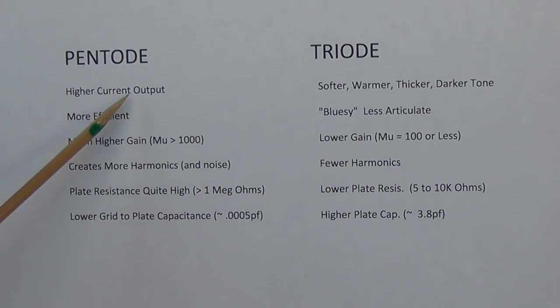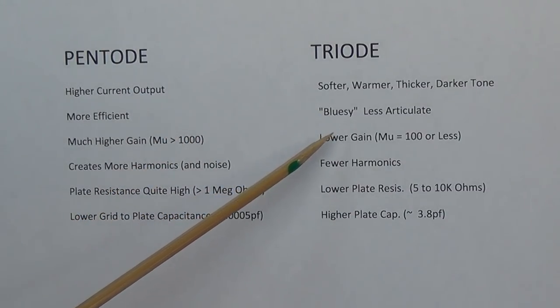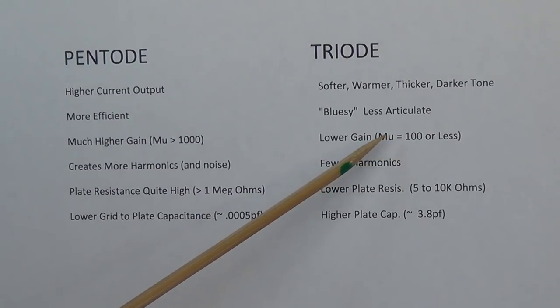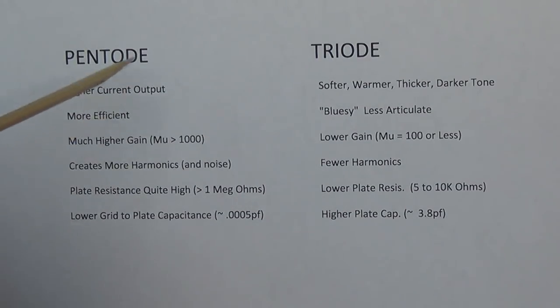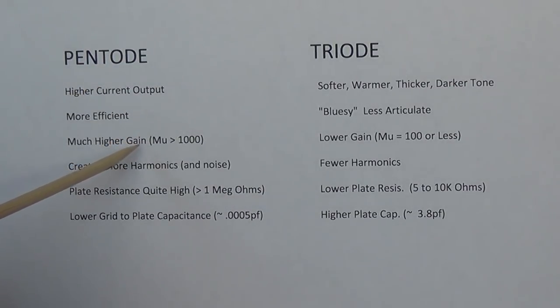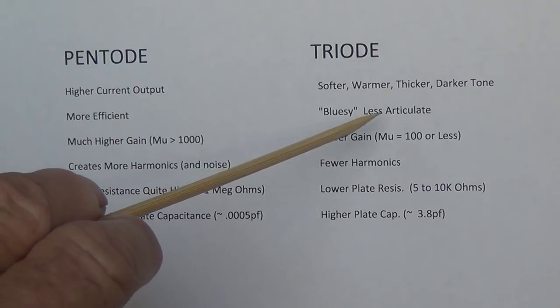Pentodes have a much higher current output. They are much more efficient. Those extra grids really help the tube function. The result is that pentodes have much higher gain, with a mu or amplification factor of 1000 or more. Recall that the 12AX7, which is one of the highest performing of all triodes, has a mu of only 100, and most of the 12AX tubes are less than that. Because of this difference, it's obvious that the pentode is going to have much more gain and therefore much more volume. It's going to really drive the output tubes. It's going to be a lot cleaner, more headroom than the triode, which is known to be generally softer, warmer, thicker, darker tone, bluesy, less articulate.